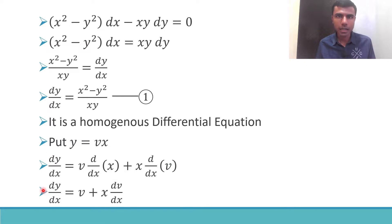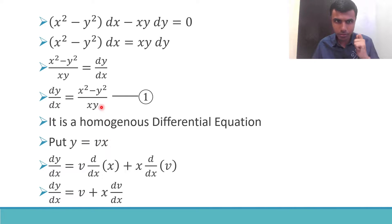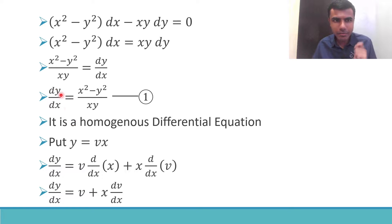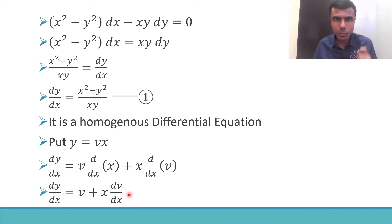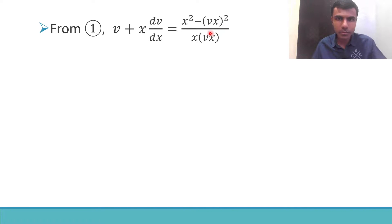Now whatever I got up till now, I'm going to put it in equation one. In place of y, wherever you see y on the RHS, replace it with vx. And in place of dy/dx, put v plus x dv/dx. Upon doing these two substitutions, I get something like this after basic simplification.